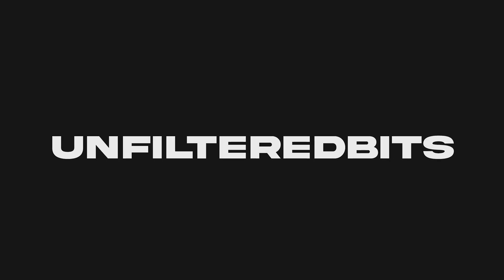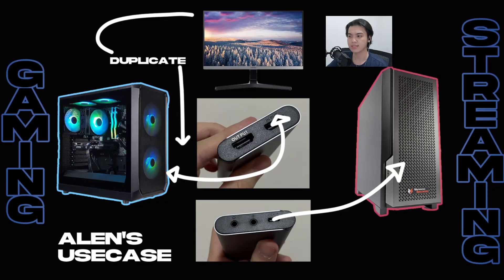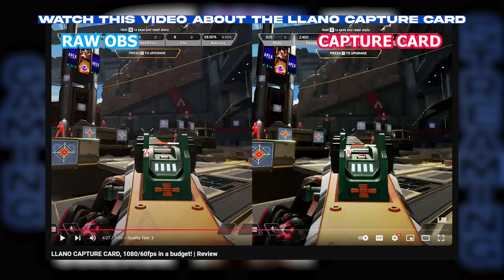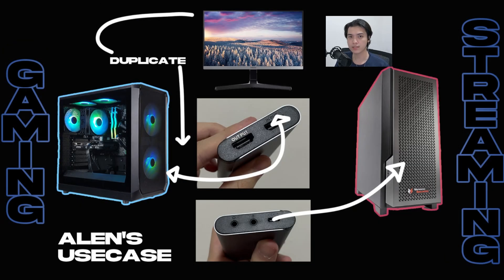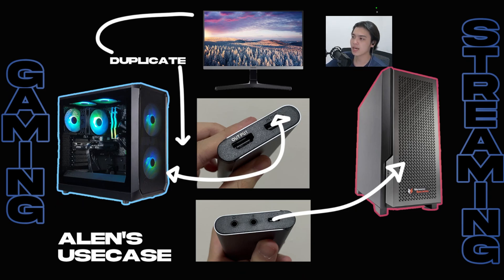We're now on my desktop — specifically Photoshop — because I made this diagram for my last video talking about the capture card I use for my dual PC setup. Check out the description if you want to watch that first. This is my personal setup and the fastest way to do it. My camera is connected to the second PC.